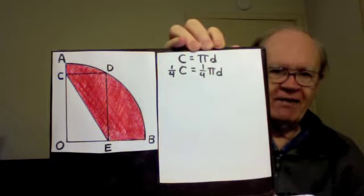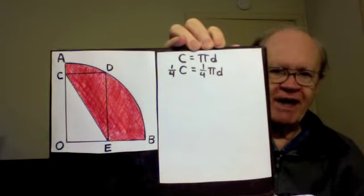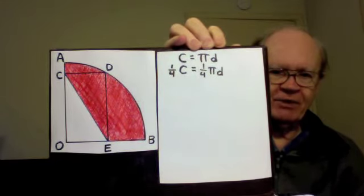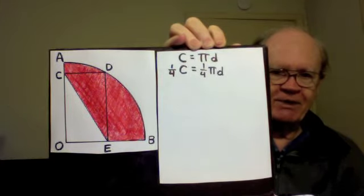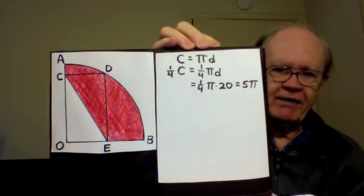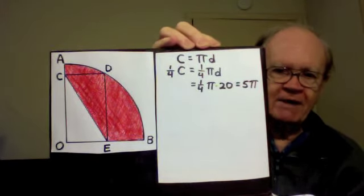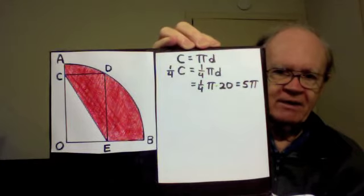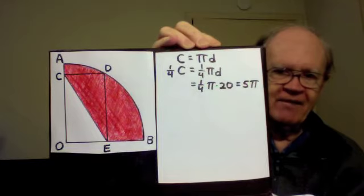Well, I said length AO is 10 units. AO is a radius of the circle, and since the radius is 10 units the diameter is twice that, which is 20 units. So the length of arc AB is one fourth times pi times 20, one fourth of 20 is 5, so that length is 5π.